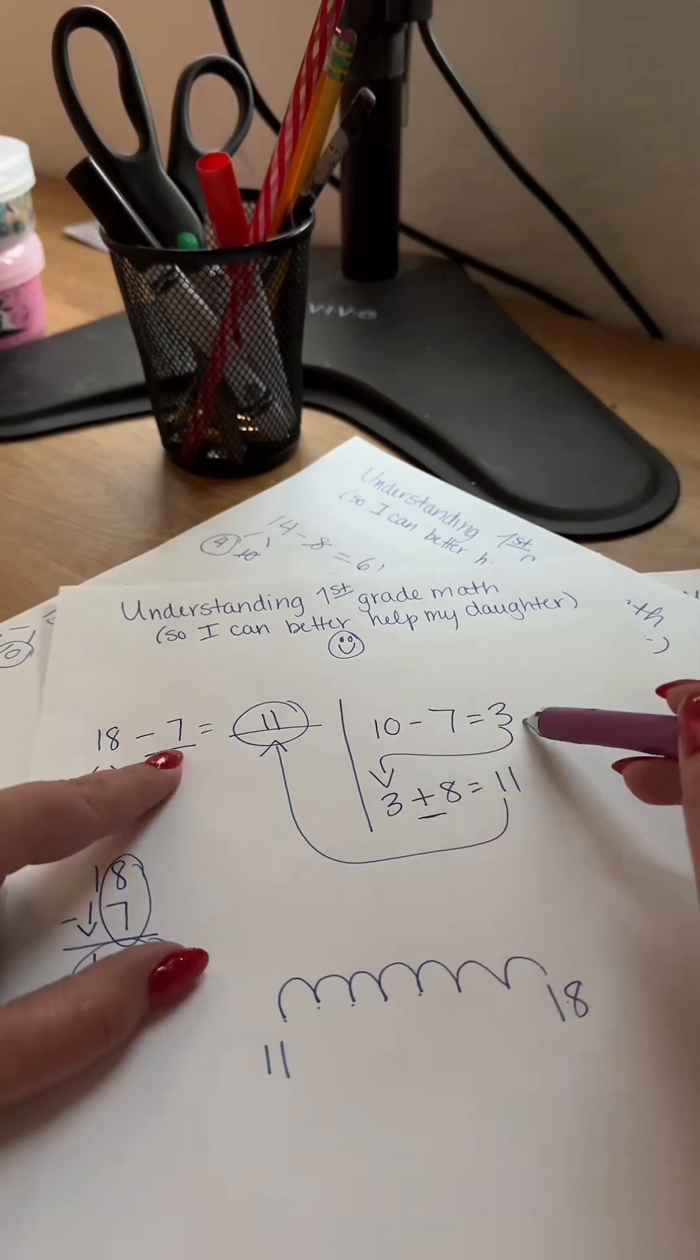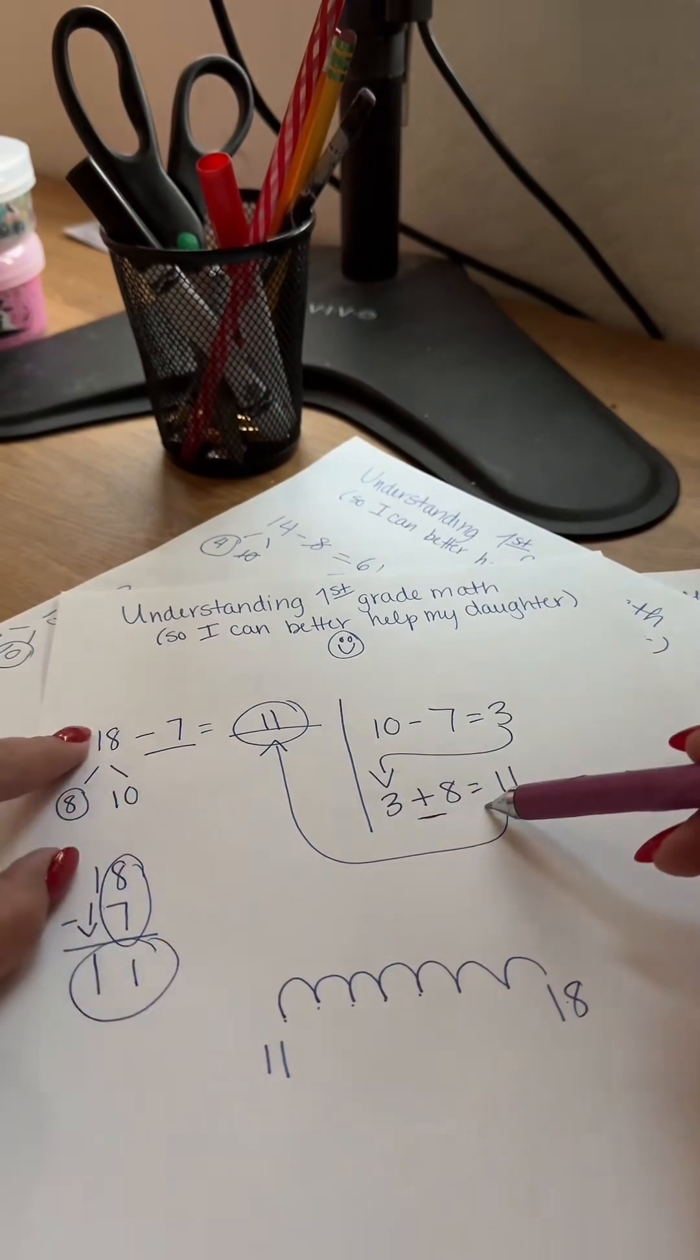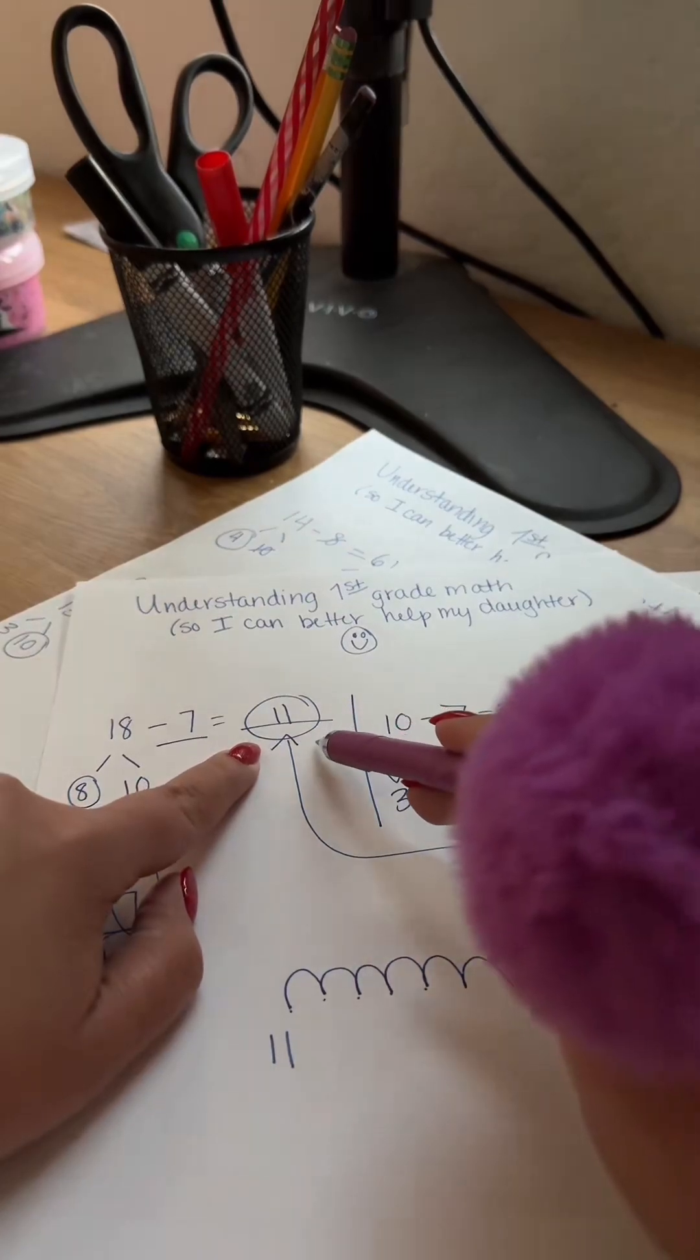10 minus 7 here equals 3. 3 plus our remainder to our original problem, 3 plus 8 equals 11, therefore 18 minus 7 equals 11.